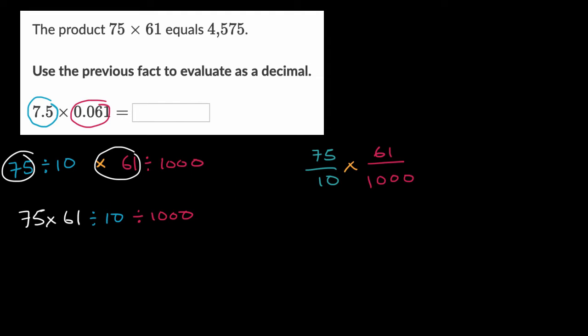Or you could look right over here and say, all right, if I'm taking this product, my numerator is going to be 75 times 61, and then my denominator is going to be 10 times 1,000, which is essentially the same thing as dividing by 10 and then dividing by 1,000. And of course that is going to be 10,000.